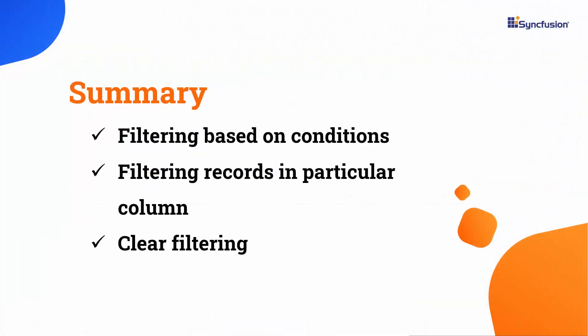In this video, I have shown you how to filter records in the data grid view and based on conditions for all or a particular column. You also saw how to clear filtered records. If you want to see a working example, you can download it from the GitHub link provided in the video's description. I have also included a link in the description where you can check whether you qualify for our community license, which gives you a free license key for our entire .NET MAUI control suite. If you found this video useful, don't forget to click the like button and subscribe to our channel to watch more videos like this. Thanks for watching.